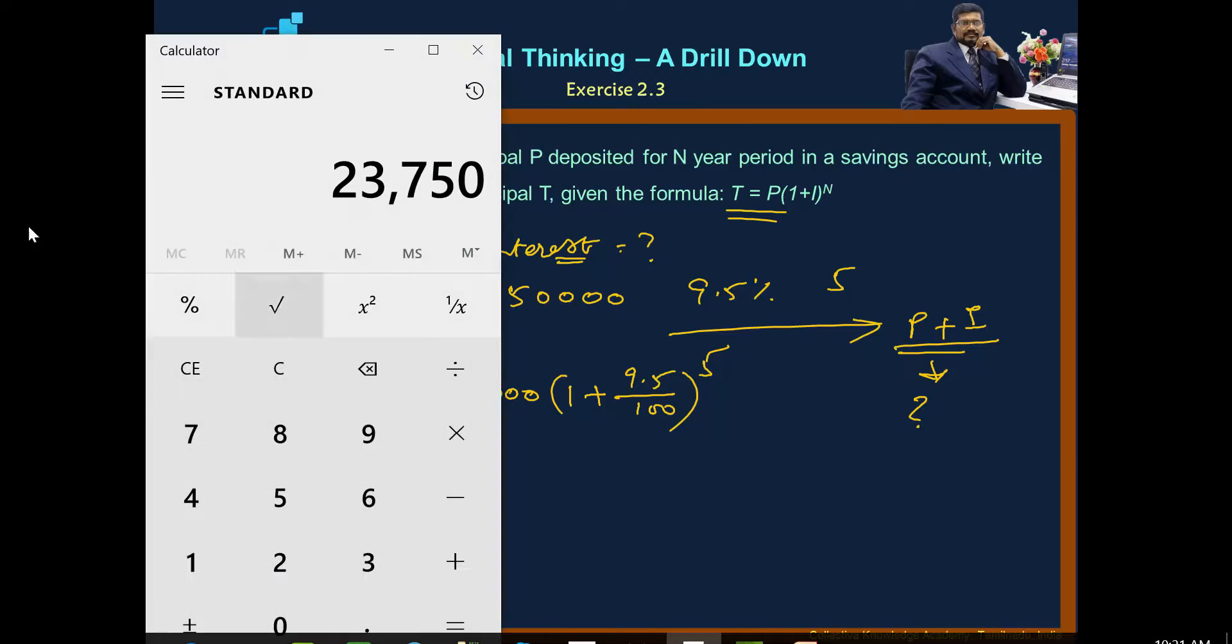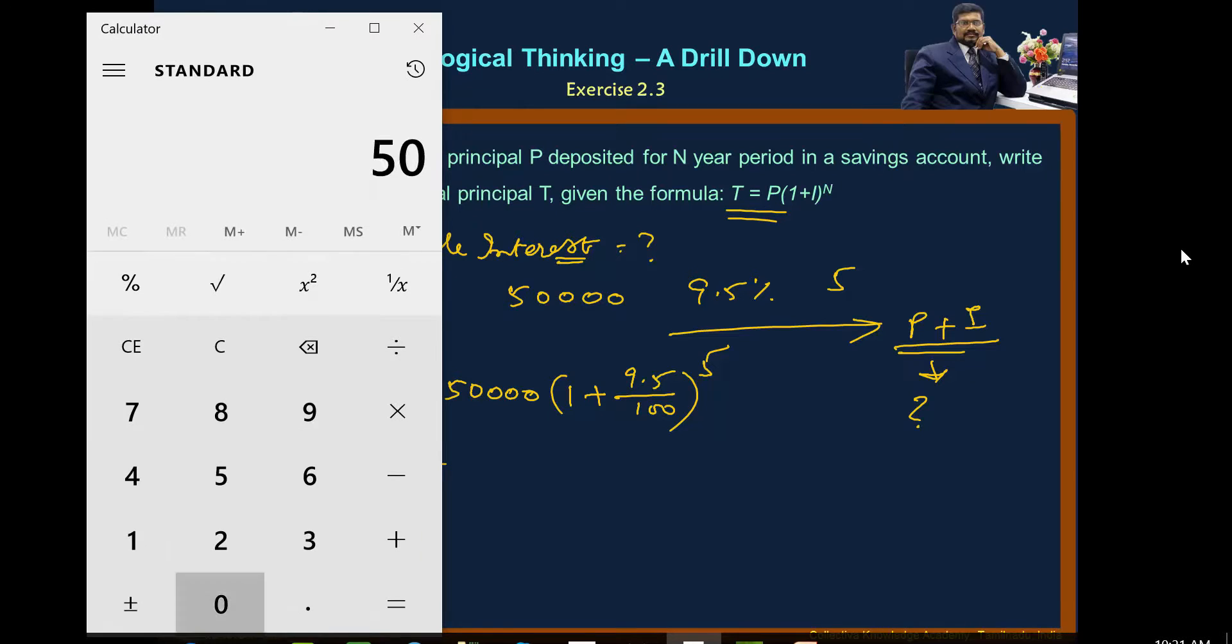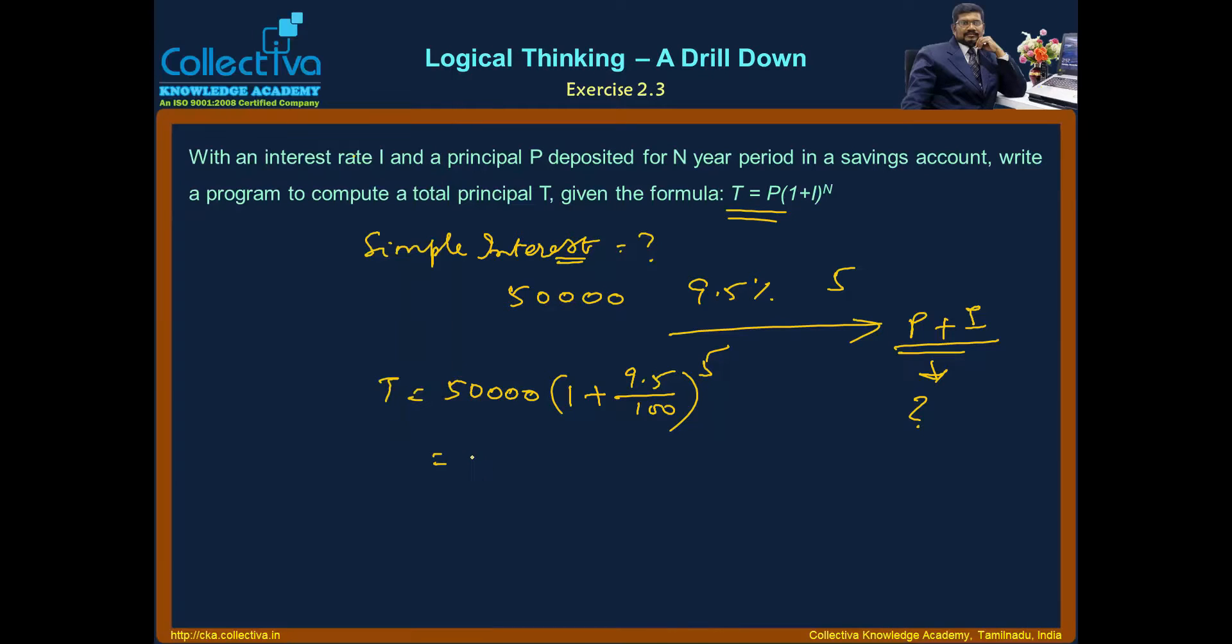So, 50,000. Now let us evaluate this. 9.5 divided by 100, that's 0.095 plus 1, which gives us 1.095. So 50,000 multiplied by 1.095 power 5.